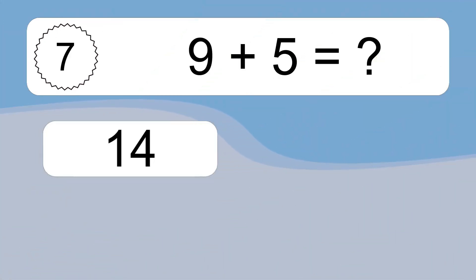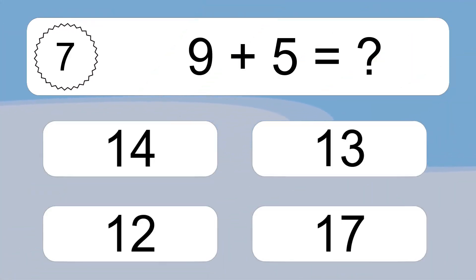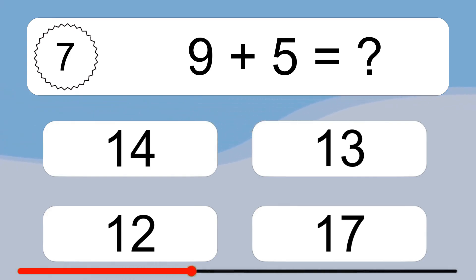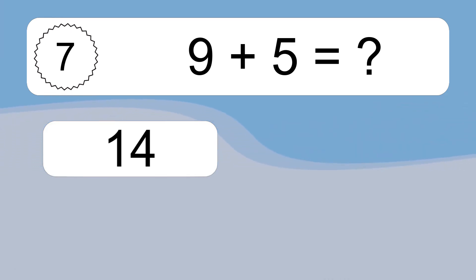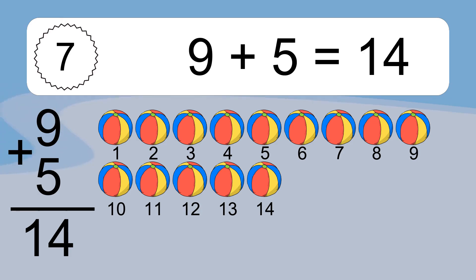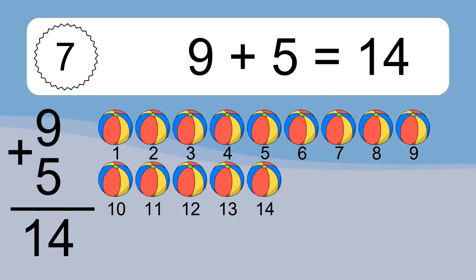9 plus 5 equals what? 9 plus 5 equals 14. Let's count it: 1, 2, 3, 4, 5, 6, 7, 8, 9, 10, 11, 12, 13, 14.